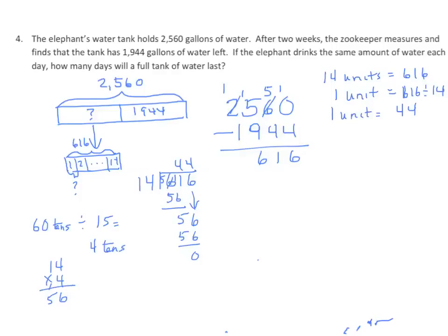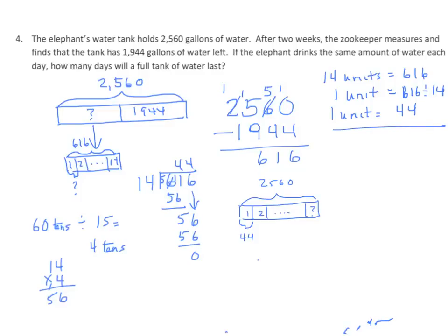Let's go back to the question: if the elephant drinks the same amount of water each day, how many days will a full tank last? We know that 1 day is 44 gallons. So we know the whole is 2,560, and we want to divide this into equal parts where each part equals 44. We don't know how many parts we have, so I'll label this 1, 2, and a question mark for the total. But we do know each part is 44. So how many 44s are in 2,560?